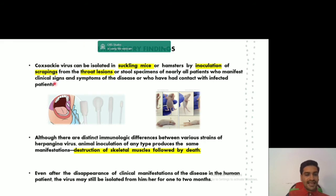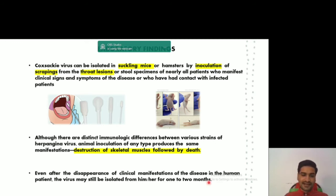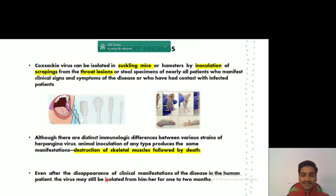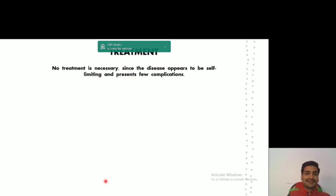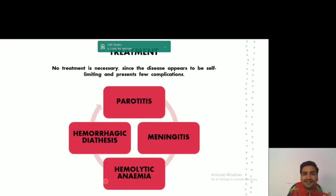The clinical signs seen in mice — such as vesicle or ulcer formation — are somewhat similar to what we see in human patients. Even after the disappearance of clinical manifestations of the disease in the human patient, the virus may still be isolated from the patient for one to two months after the disease has resolved.